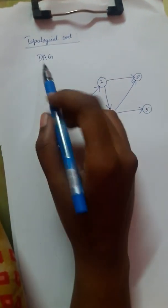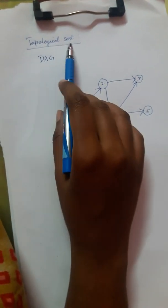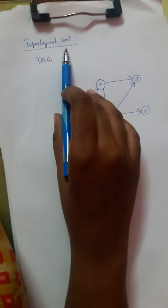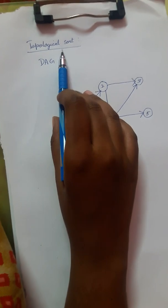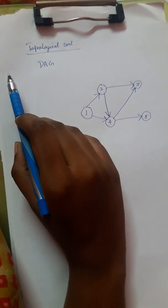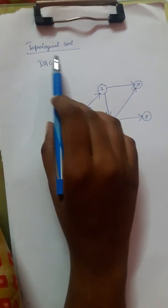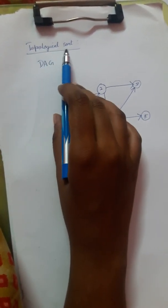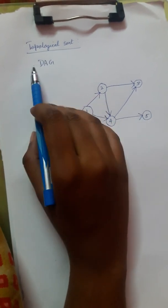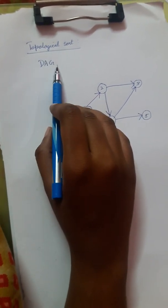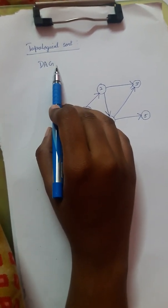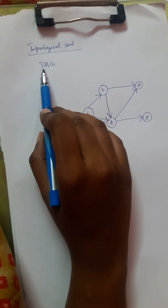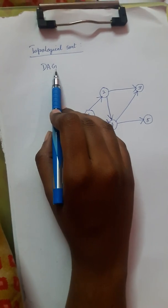The topic is topological sorting. In topological sorting we need to follow DAG — a Directed Acyclic Graph.